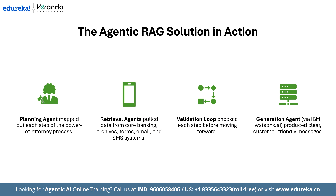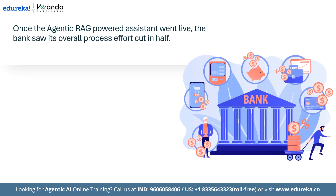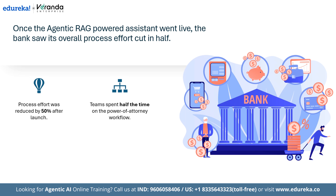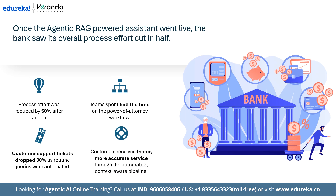What did this translate to in real numbers? Once the Agentic RAG-powered assistant went live, the bank saw its overall process effort cut in half — teams spent 50% less time on the power of attorney workflow. Customer support tickets dropped by 30% since most routine questions were handled end-to-end by the system. Customers enjoyed faster and more accurate service, all because of an automated and context-aware pipeline. This example shows how Agentic RAG isn't just better search plus generation — it's about coordinating multiple tools and data sources, validating results on the fly, and delivering fully automated, context-aware workflows.